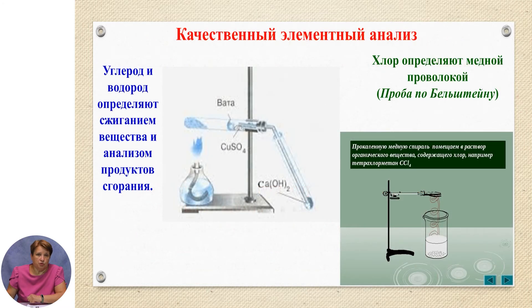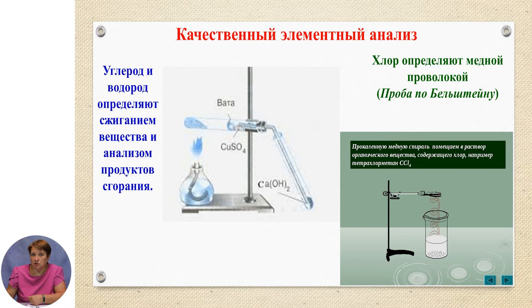Let us recall: in grade 11, when we first began studying organic chemistry, you did a practical work on the qualitative determination of carbon, hydrogen, and chlorine in organic substances. You remember that carbon and hydrogen are determined by combustion of substances, and chlorine is detected by interaction with a heated copper wire — the so-called Beilstein test.